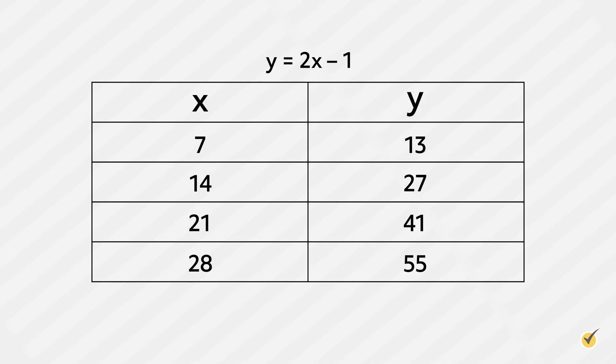Let's try one more example, this time using a table for the function y equals 2x minus 1. What would be our domain and range given this table? Our domain would be 7, 14, 21, and 28, and our range would be 13, 27, 41, and 55.